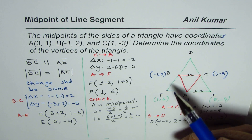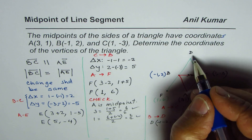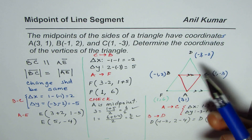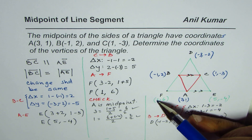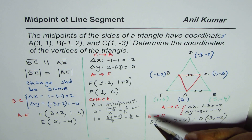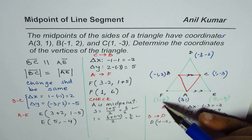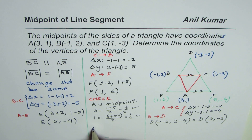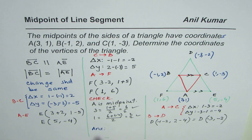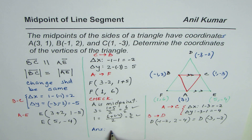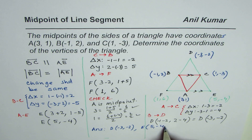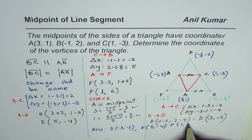We can verify: (-3 + 1)/2 = -2/2 = -1, which matches B's x-coordinate. And (-2 + 6)/2 = 4/2 = 2, which matches B's y-coordinate. So the answers are correct. The coordinates of the vertices are: D(-3, -2), E(5, -4), and F(1, 6).